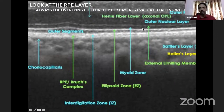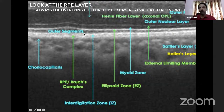When you look at the outer retina, we put all these layers together — we look at the external limiting membrane, the ISOS layer (now called the ellipsoid zone), the interdigitation zone, and then the RPE and Bruch's complex. All of these together we call the outer retina.